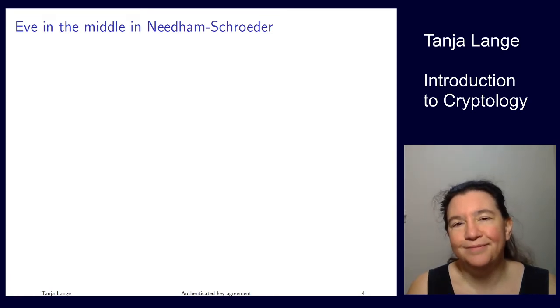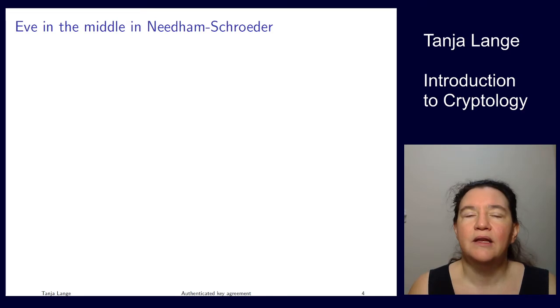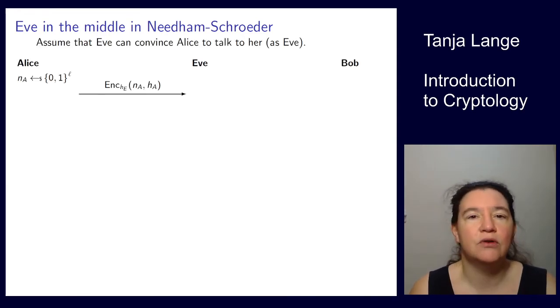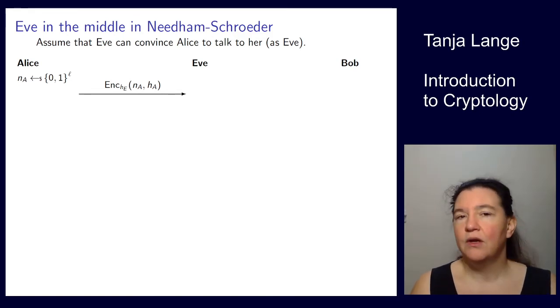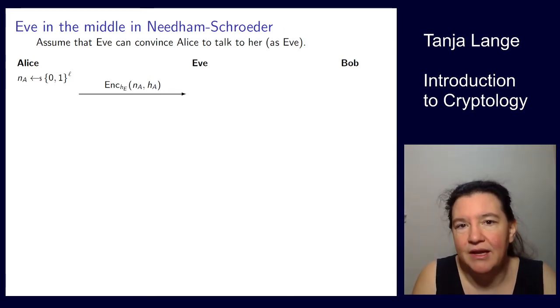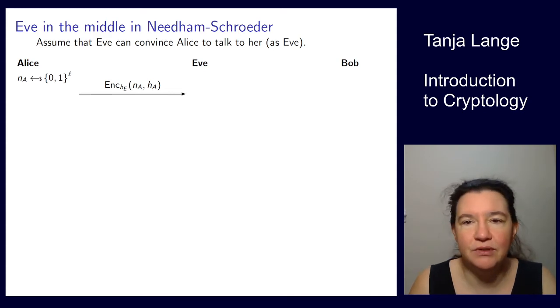So how can we do Eve in the middle in this Needham-Schroeder protocol? First of all, it's already a bad thing for the protocol if she can impersonate one part to the other. So let's do the side of impersonating Alice to Bob. So Eve will get in the middle, but not for both sides. And she also needs sort of the cooperation of Alice, but as an innocent party. So let's assume that Eve can convince Alice to start talking to her. Say, Eve calls up Alice saying, hey, I think my crypto box is wrong. I've been trying to talk to you, but it doesn't get a connection. Hey, can you just start a connection with me? And then, Alice is a nice person, and so Alice will start the communication. And here we have the normal first phase in the Needham-Schroeder protocol.